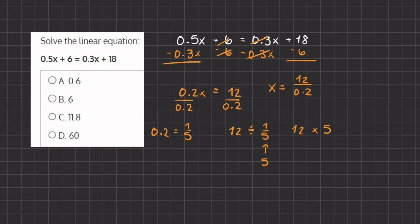Alright, so now we have a simple multiplication problem of 12 times 5, which gives us 60. So 60 is the value of x, which solves our linear equation, and d is the right answer.